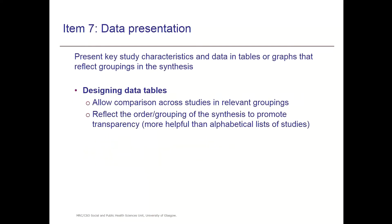When you're thinking about how you present your data, what you want to consider is to allow a comparison of the studies in the relevant grouping, and also order the studies and the grouping to promote transparency. Very often, particularly in Cochrane reviews, most of the data are presented in the characteristics of included studies tables, which are listed alphabetically. It's very difficult then as a reader to see where the data come from for any particular comparison group, or to compare studies within a comparison group for their key characteristics. We would recommend that you think a bit more creatively about how you present the data.